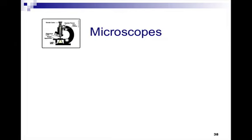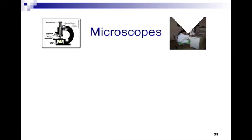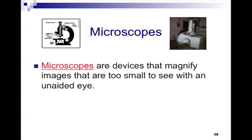All right, the main thing we're going to deal with is the microscope. Microscopes, which I'm sure you've used before you got to Craig High School, they are devices that magnify images that are too small to see with an unaided eye. The type of microscope that we use in school is what's called a compound light microscope.